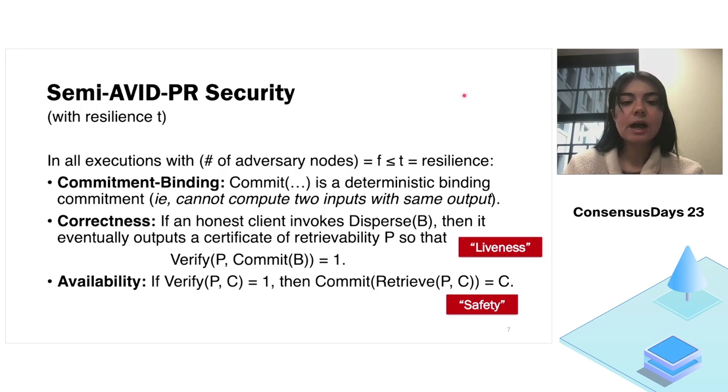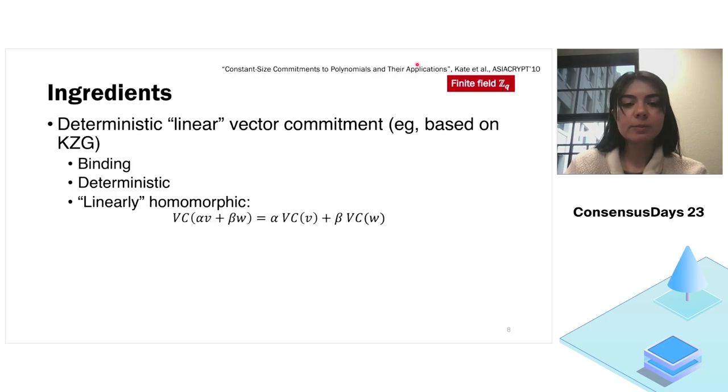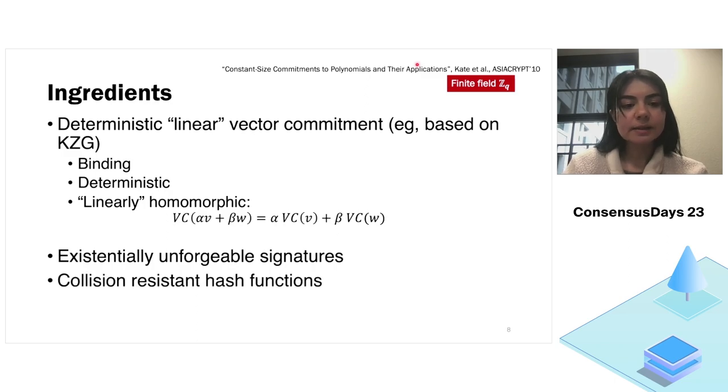So these are the definitions, but how do we actually construct such a scheme? So we can do that, but for that we need a few ingredients. So the first is a deterministic linear vector commitment. For example, KZG commitments. All we need is, we need them to be binding, we need them to be deterministic, and we need them to be linearly homomorphic. Saying that if we commit to a linear combination of vectors, it will be a linear combination of the commitments. And I will explain later why this is important for us. Also, we need some standard cryptoprimitives such as a secure signature scheme and a collision-resistant hash function. And also we will use linear erasure codes.